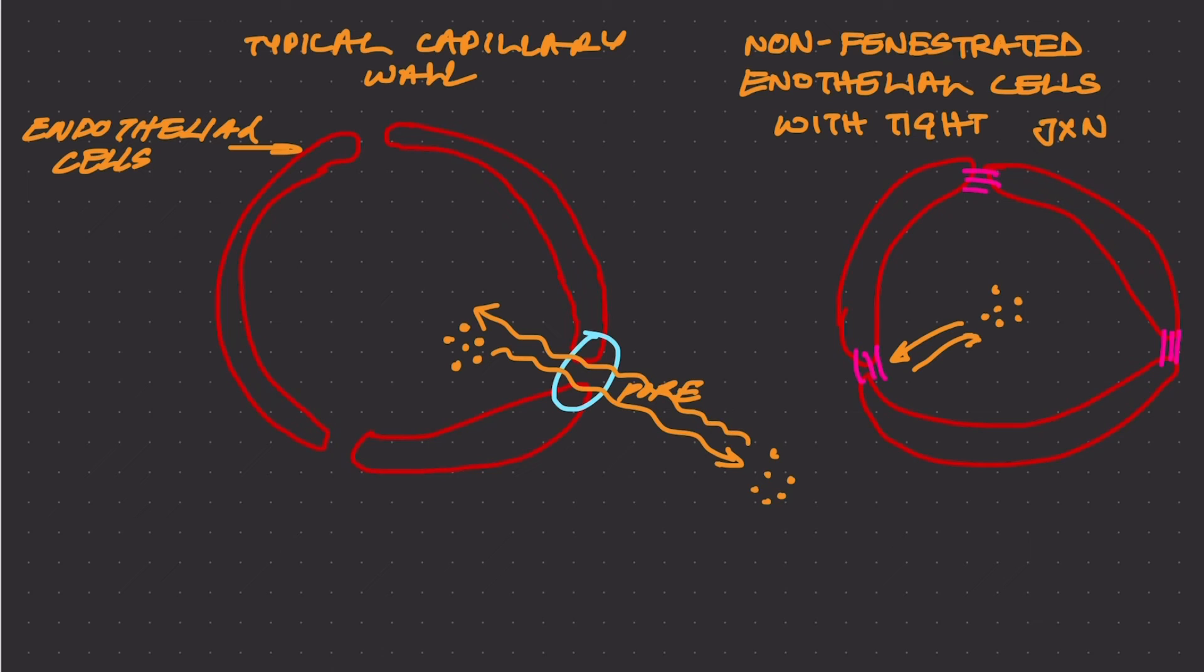The hydrophilic molecules that could just freely go across on the left now have to be transported across because the pores are really small due to these tight junctions.